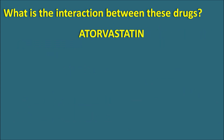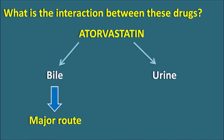Atorvastatin can be excreted into the bile as well as through the renal system into the urine. However, biliary excretion via hepatobiliary elimination is the major route, while only about 1% of the drug and its metabolites are excreted in the urine. Rifampin interacts with atorvastatin by increasing its biliary excretion, stimulating P-glycoprotein pumps at the hepatic cells to increase biliary excretion of atorvastatin.